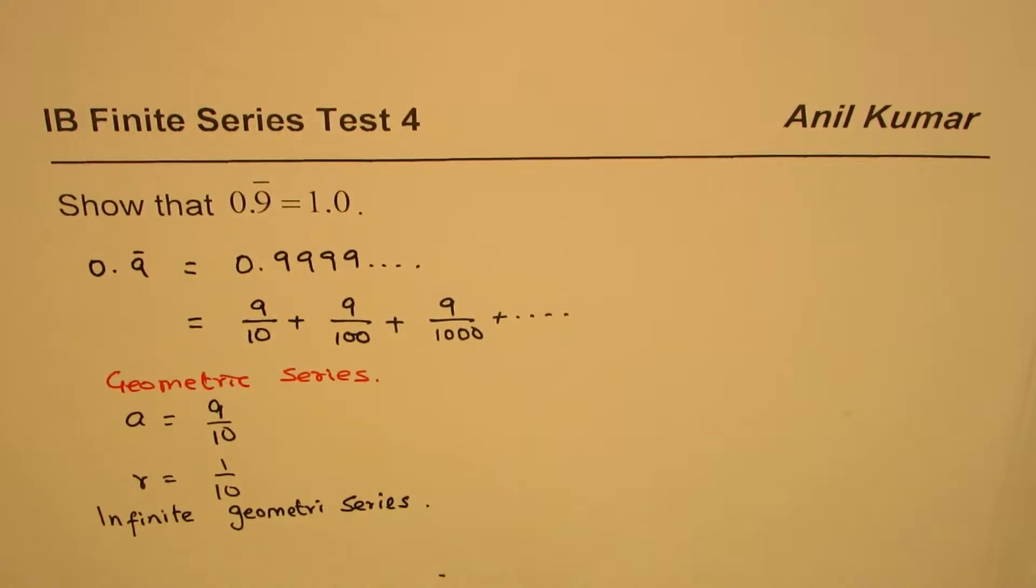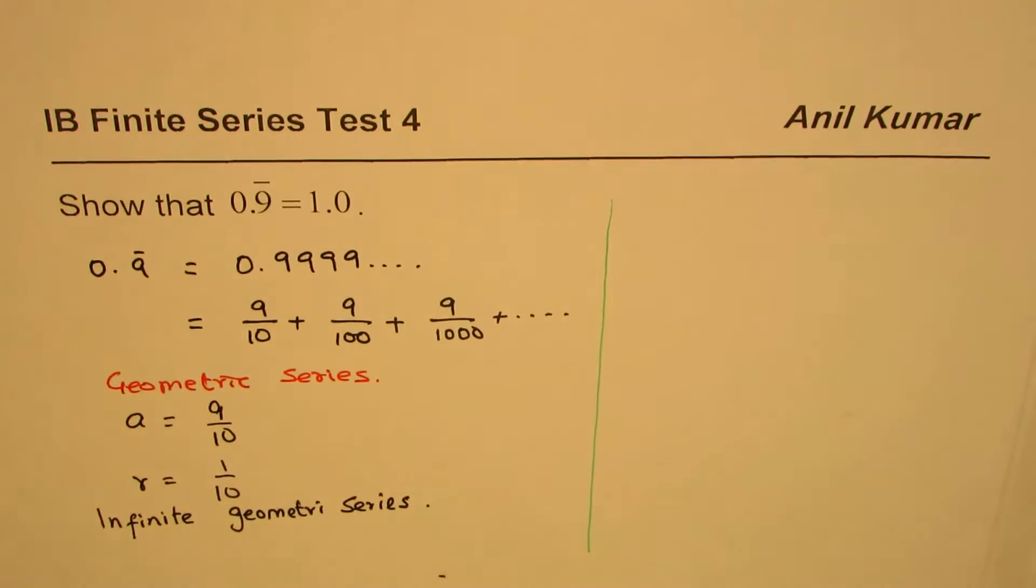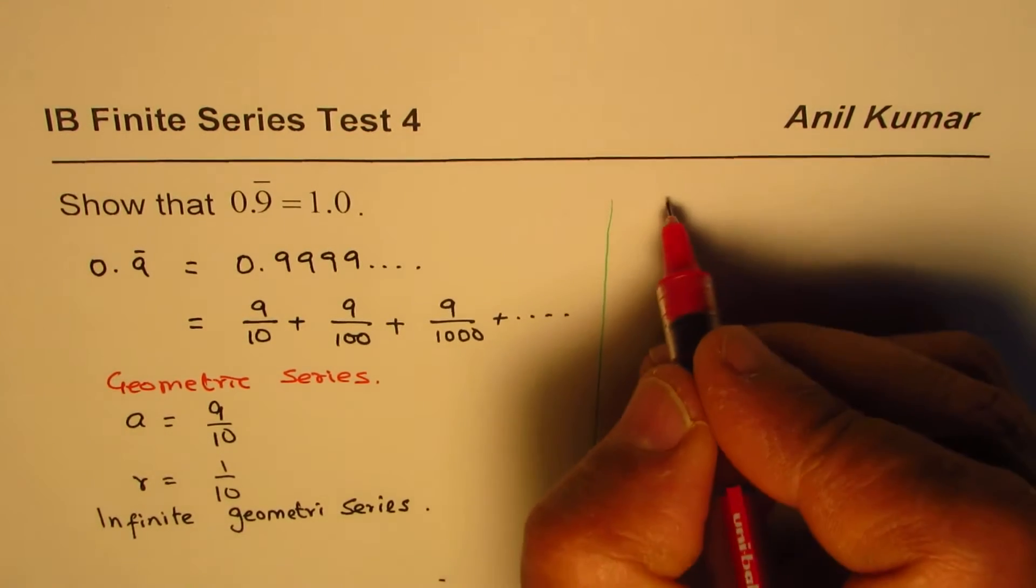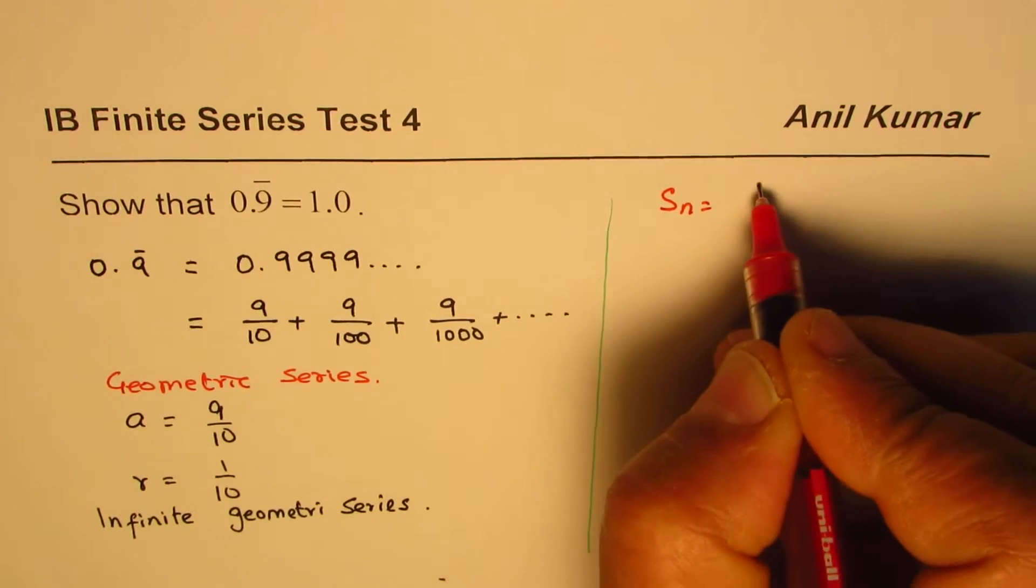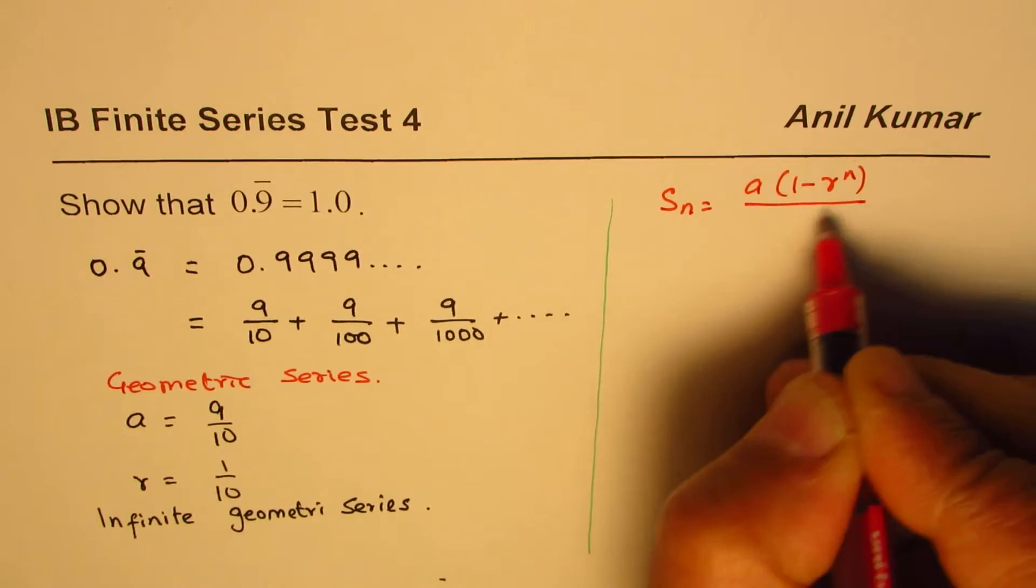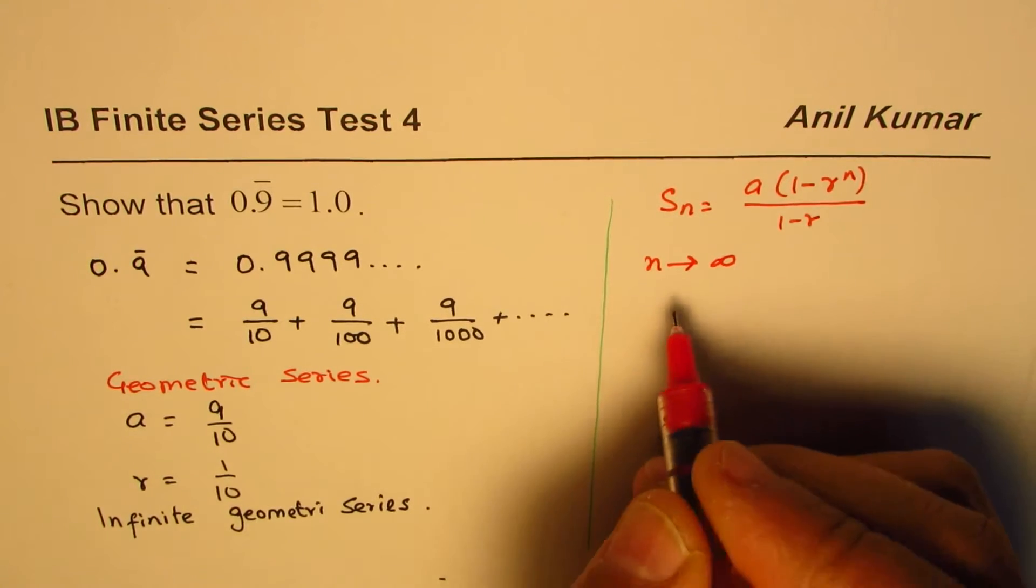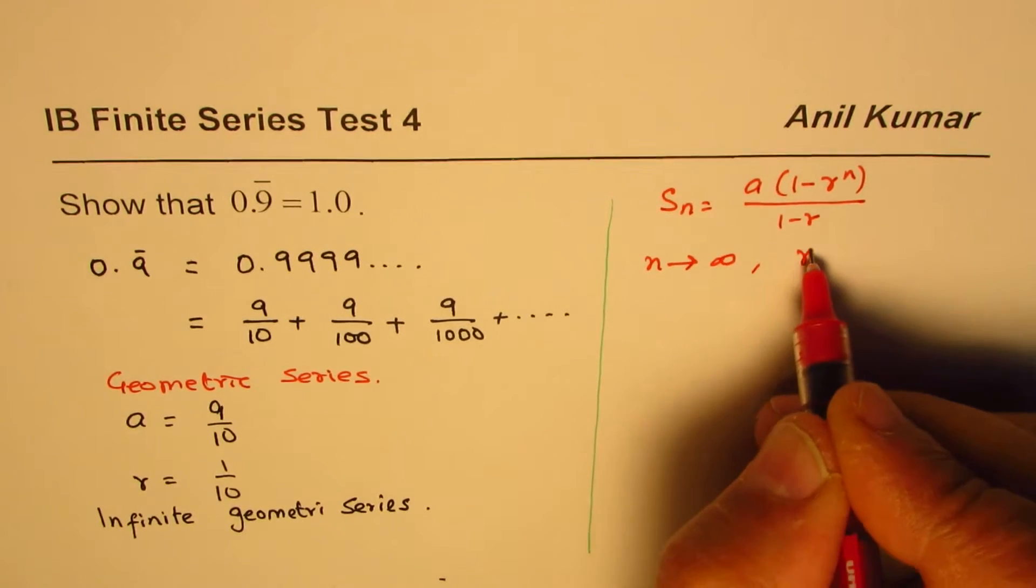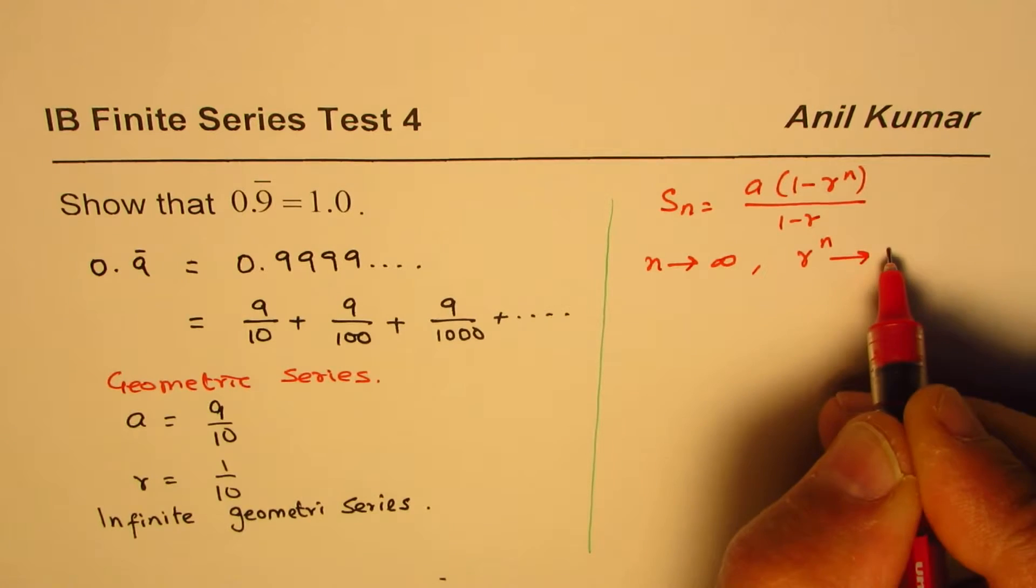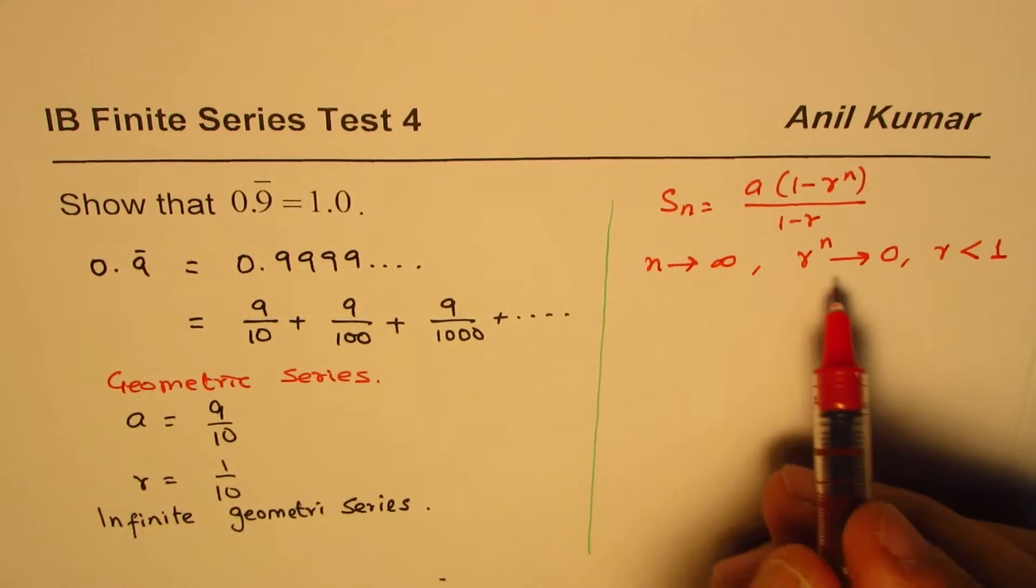Therefore we can find the sum of all this. The general formula for geometric series is a times (1 - r^n)/(1 - r). But if n approaches infinity, then r^n approaches 0 if r is less than 1. If r is a smaller number, as the power increases it becomes smaller and smaller.